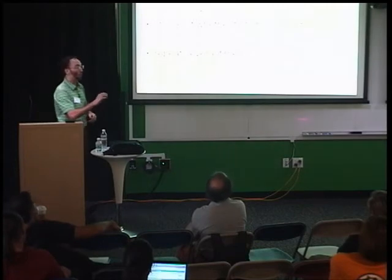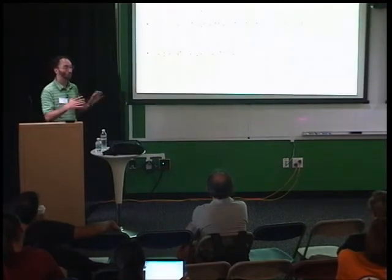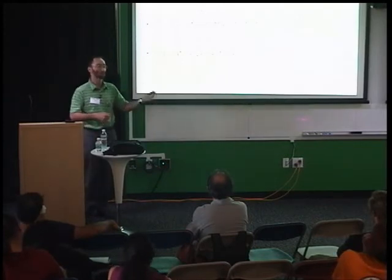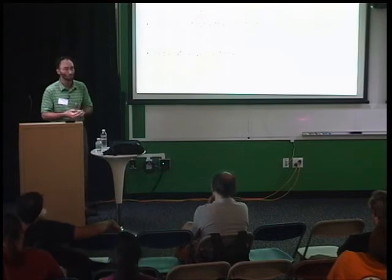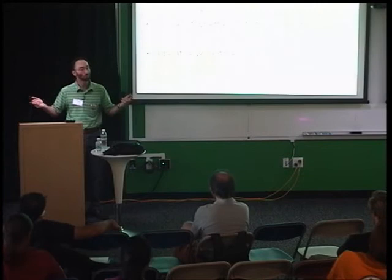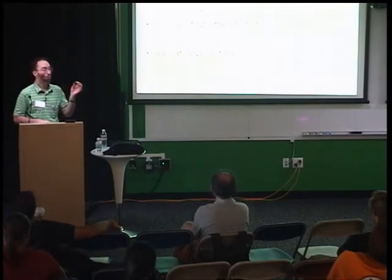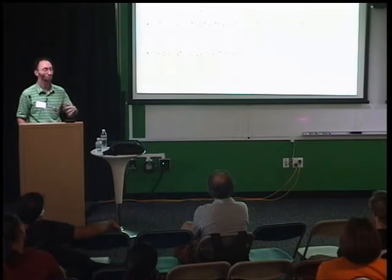What made this interesting from a reputation point of view is that after people accepted some exchange, there was an additional decision round where each person could decide whether they were going to fulfill their contract or not, and everybody does this simultaneously without knowing what everybody else is going to do. The buyer thinks: I promised to give you $7, but if I keep the $7, I'm $7 richer, and I could still get the unit if you give it to me. Similarly, the seller has to decide: do I give the unit? It's going to cost me $5 to buy it from the experimenter, and if I don't give the unit, I don't have to pay that $5. So that's where the issue of trust and cooperation comes in in this particular experiment. We then repeated this several times in different scenarios in different groups of students over different days.